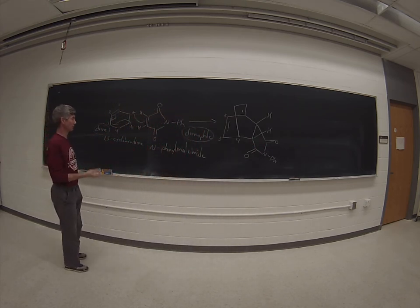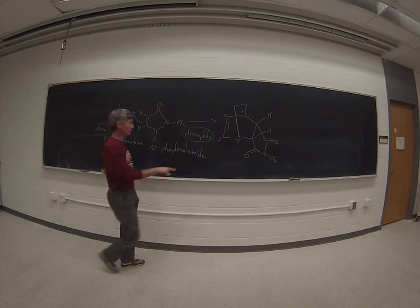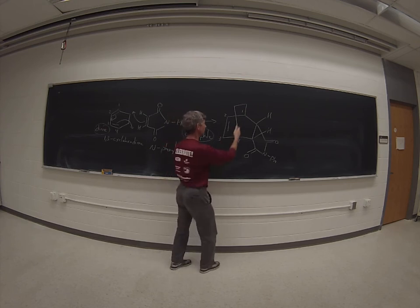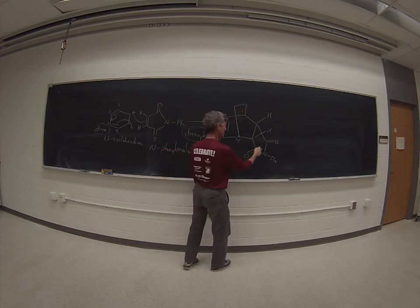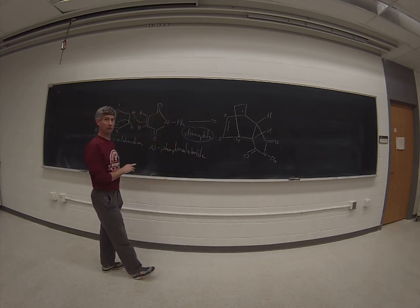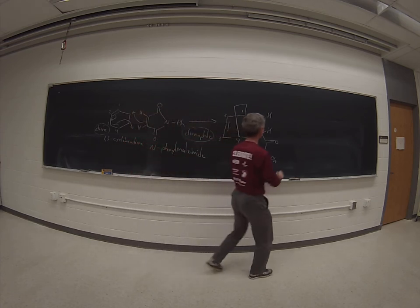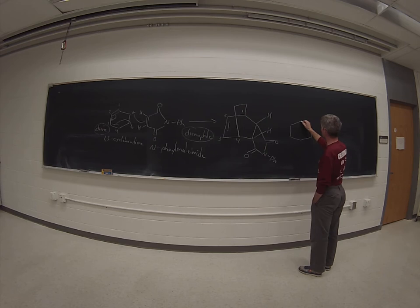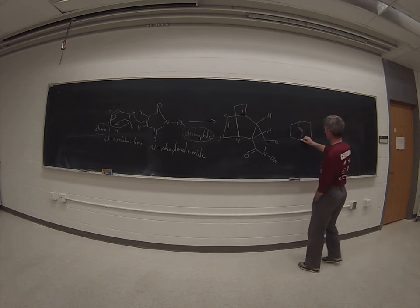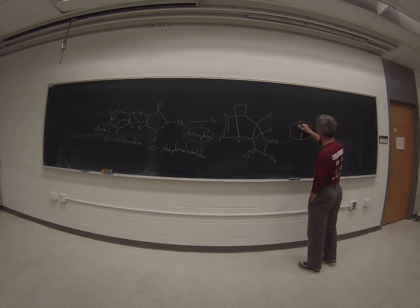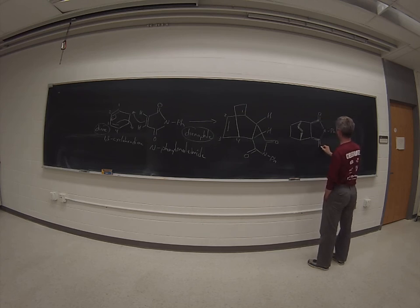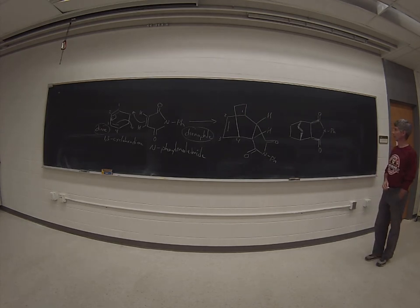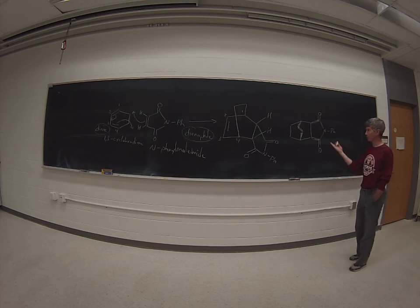That's because of secondary orbital overlap, which I want to show you in this particular system. So this is the product that you would be isolating, and you'll notice it's quite symmetrical — there's a plane of symmetry right down the center. Carbons 1 and 4 are the same, carbons 2 and 3 are the same, carbons 5 and 6 are the same, and the carbonyls are the same as well. Another way to draw that molecule — probably the way you'll see it on SciFinder — is to show the bridge in the up position, with the carbon-carbon double bond bridge on the same side as the maleimide species, giving the endo product.